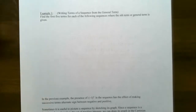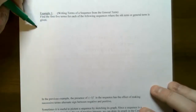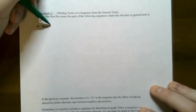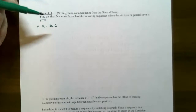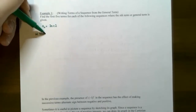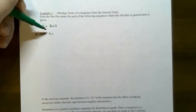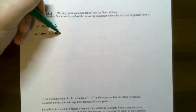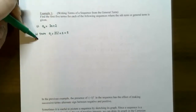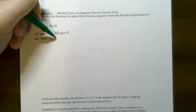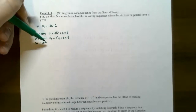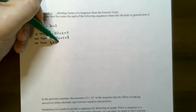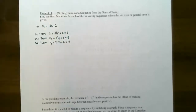Example 1: find the first five terms for sequences where you know the nth term. For number one, the nth term is a_n = 3n + 2. The first term, a₁, is 3(1) + 2 = 5. The second term is 3(2) + 2 = 8. The third term is 3(3) + 2 = 11 — so it's not the Fibonacci sequence.